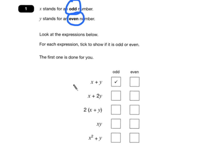So if we start with x plus 2y, well, if x is odd plus 2 times an even number, we know that 2 times an even number will be even. So an odd plus an even will always end up as an odd number.